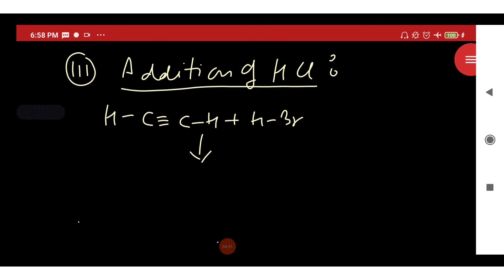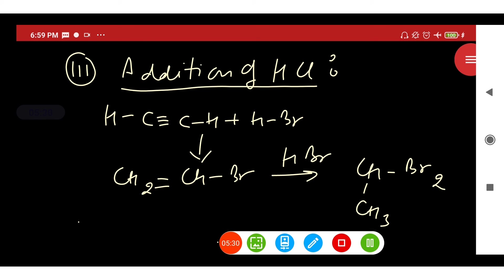Next is addition of hydrogen halide. The two molecules of hydrogen halide add to alkynes to form gem dihalides. So let us take the example of ethyne which in the presence of hydrogen bromide first forms bromoethene. On further addition of hydrogen bromide, 1,1-dibromoethane is formed which is a gem dihalide.